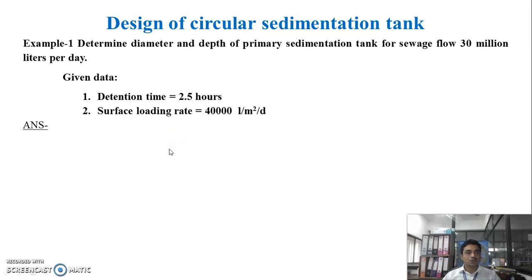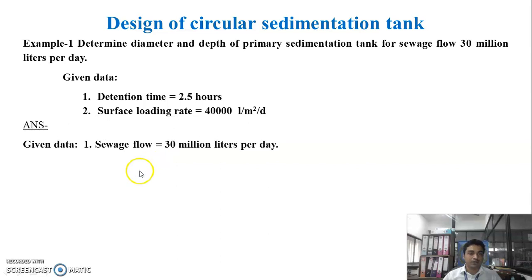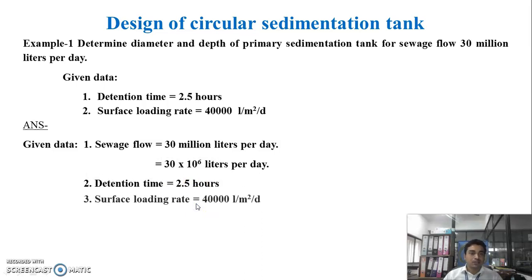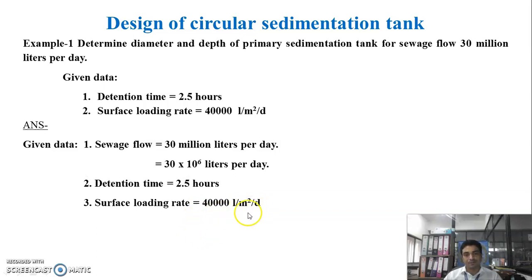First, you have to write down the given data. Sewage flow is 30 million liters per day, that is 30 × 10⁶ liters per day (since 1 million equals 10⁶ liters). Detention time is 2.5 hours. Surface loading rate is 40,000 liters per meter square per day. These units are very important.